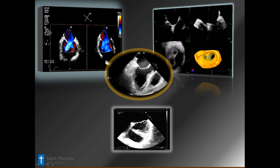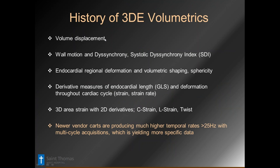The history we've gone down: we started by looking at wall motion and volume displacement in the early days, then moved to synchrony and SDI, then regional deformation shaping, then derivative measures of longitudinal strain and deformation within the myocardium transmurally. Now we're getting to 3D area strain or full 3D strain, which is in very early stages of being numbers we'd use rather than the current derivatives — circumferential strain, longitudinal strain, twist, and torsion. Higher temporal rates on new carts will have a big effect on how quickly we advance.